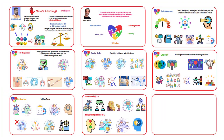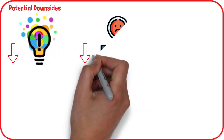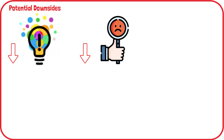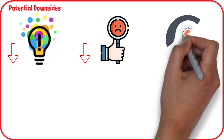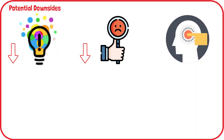While high emotional intelligence is generally beneficial, there are some challenges and potential downsides. High emotional intelligence might sometimes correlate with reduced creativity and innovation. Highly emotionally intelligent people may struggle with delivering negative feedback, fearing it might hurt others. And there is a risk that high EQ can be used for manipulative purposes.